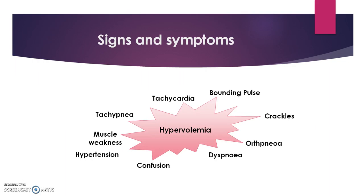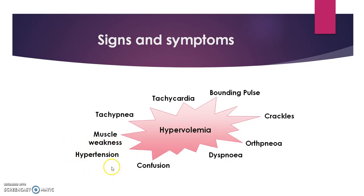Because of hypervolemia, many consequences occur: tachycardia — the heart starts beating faster; bounding pulse, due to increased pressure of blood on blood vessels; orthopnea and dyspnea — difficulty in breathing; mental confusion; hypertension; muscle weakness; and tachypnea, meaning rapid breathing. So if a person suffers from hypertension because of hypervolemia, in his case the simplest treatment is diuretics.